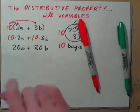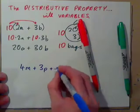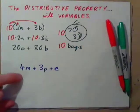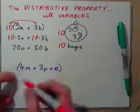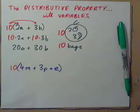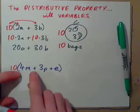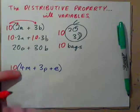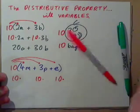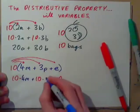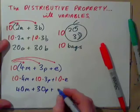So if we had in a bag 4 markers, 3 pencils, and an eraser — and this is on a school list for kids going back to school — if you wanted to get all these items for 10 children, that's what it's saying. When you see 10 times beside a parenthesis, multiply the 10 in: 10 times 4 markers, plus 10 times 3 pens, plus 10 times an eraser, giving 40 markers, 30 pens, and 10 erasers.